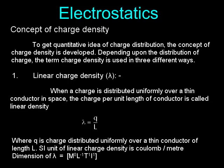λ = q / L, where q is the charge distributed uniformly over a thin conductor of length L. The SI unit of linear charge density is coulomb per meter (C/m). Dimensions of λ = [M⁰L⁻¹T¹I¹].